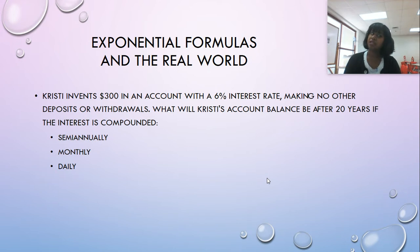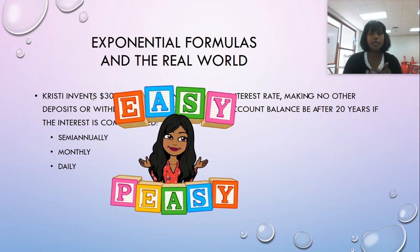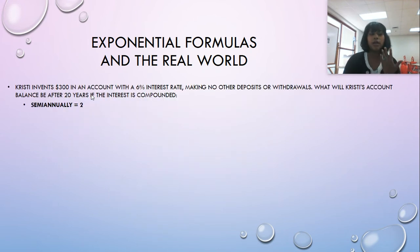Christy invests $300 in an account with 6% interest rate, making no other deposits or withdrawals. What will Christy's account balance be after 20 years if the interest is compounded semi-annually, monthly or daily? So let's do this problem. And I say it is easy peasy because it really is as simple as plugging it into a formula and then plugging it into your calculator. The hardest part is recognizing this phrasing right here. Semi-annually means twice a year. So guess what your n value is going to be? Two.